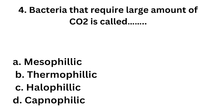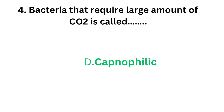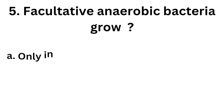Some bacteria like Brucella abortus require much higher levels of carbon dioxide for their growth. They are called capnophilic. So the bacteria that require a large amount of carbon dioxide are called capnophilic bacteria.